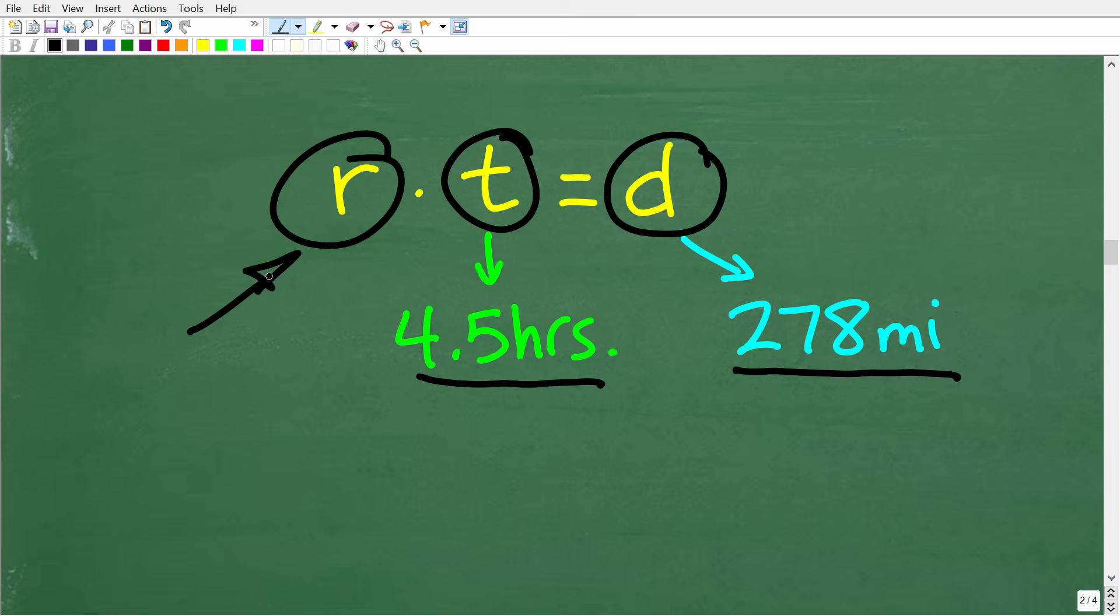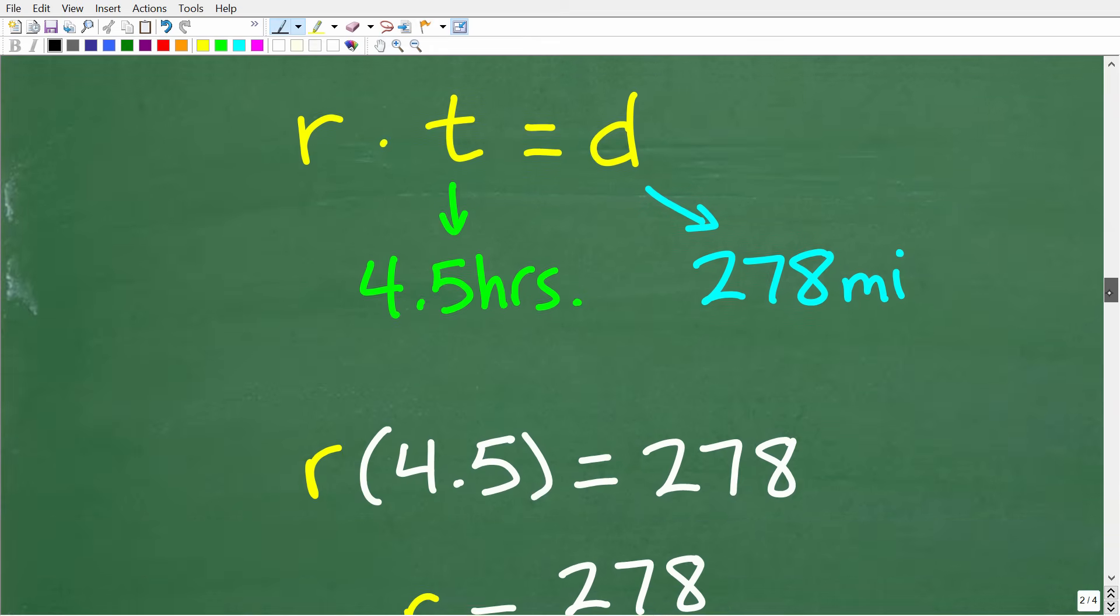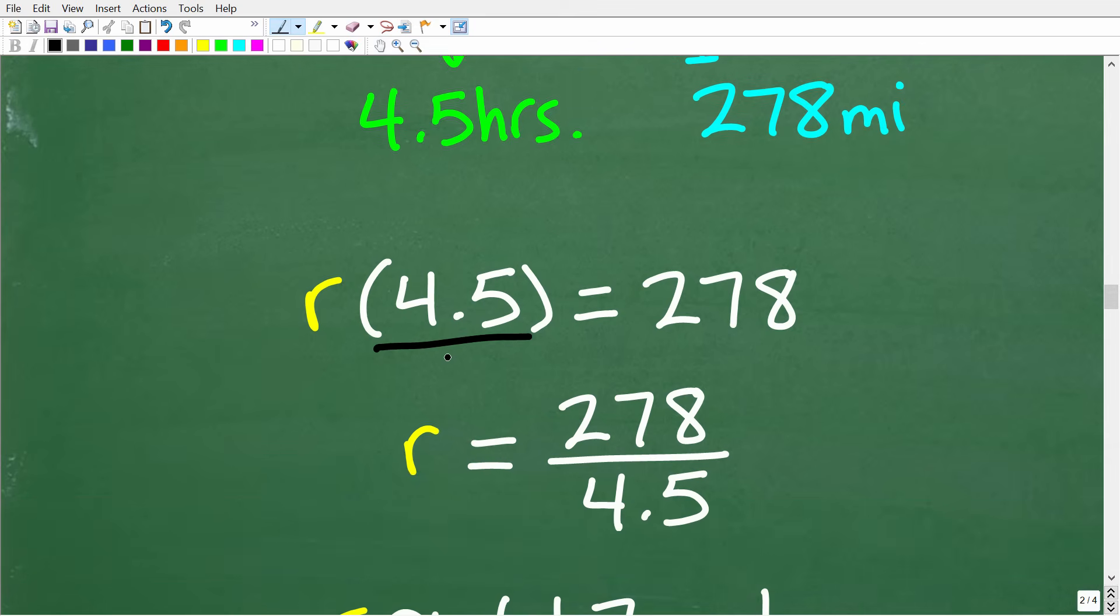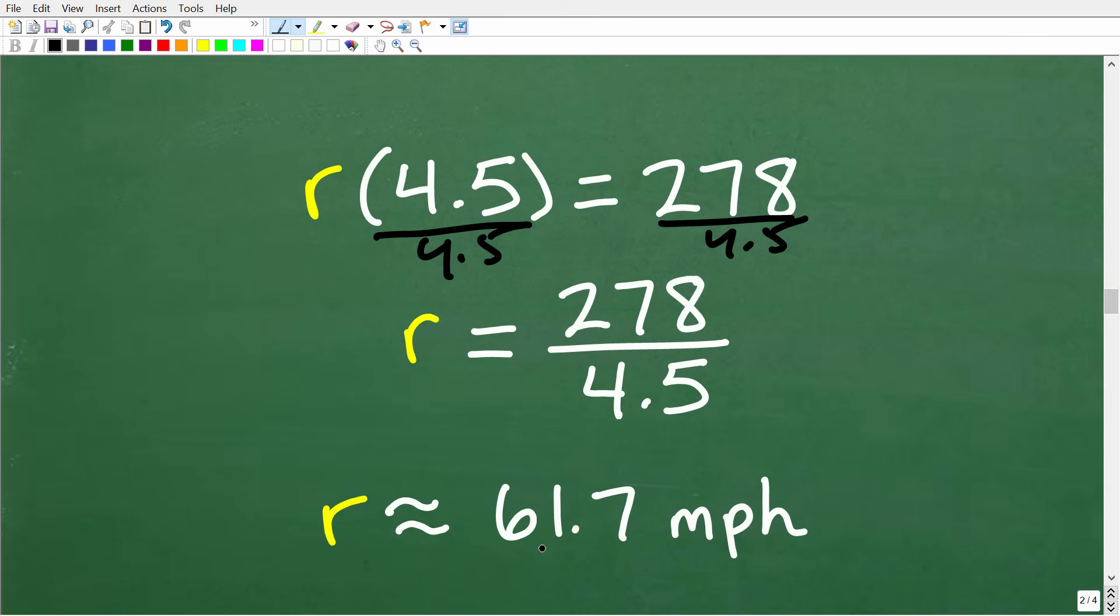Let's consider the units of measure. We're trying to solve for r, the average rate, which is the speed. We want that speed in miles per hour, and we're going to get the speed in miles per hour because our time is in hours and our distance is in miles. So our rate will be in miles per hour. All we have to do is solve for r. So r times t equals d. We're going to replace t with 4.5 and d with 278. We're left with r times 4.5 equals 278. To solve for r, all we have to do is divide both sides of the equation by 4.5. So 278 divided by 4.5 will be approximately 61.7 miles per hour, which is the answer.